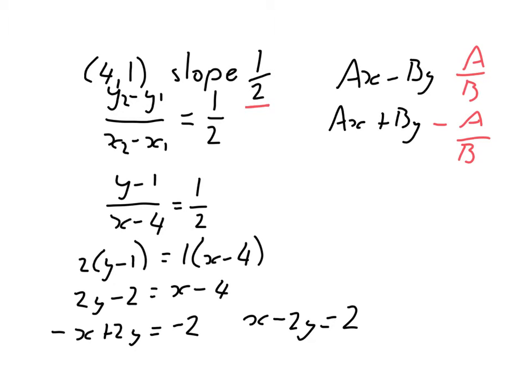Using the ax minus by form, because a in this case is 1, so it's 1x minus 2y equals, now we've got the coordinate (4, 1), the value for x is 4, so it's 1 times 4 minus 2 times 1 equals 4 minus 2 equals 2. So x minus 2y equals 2.